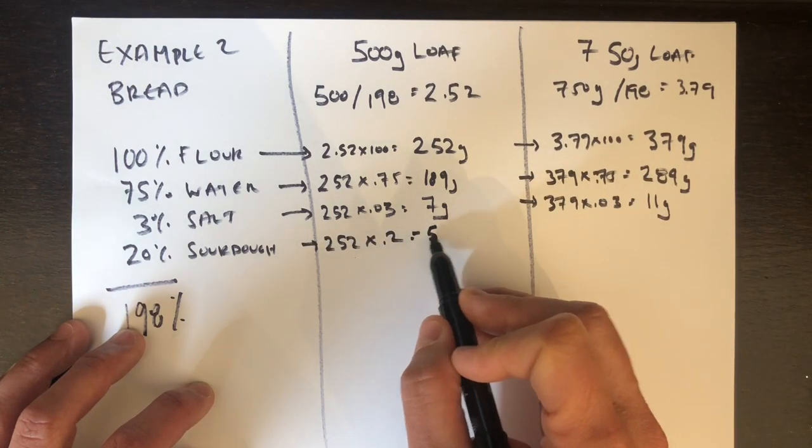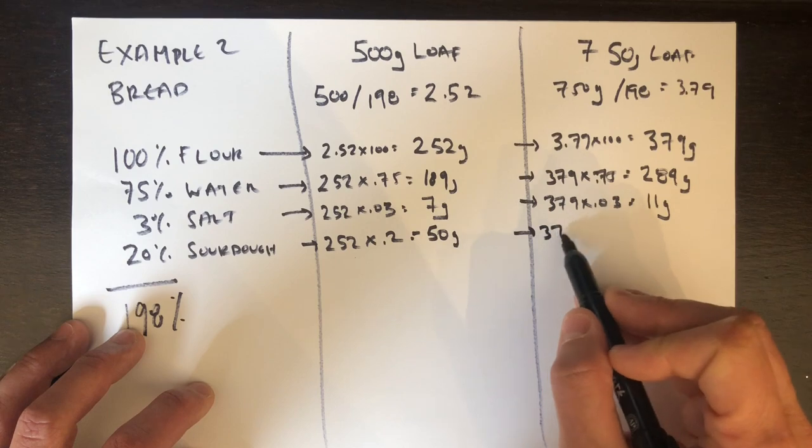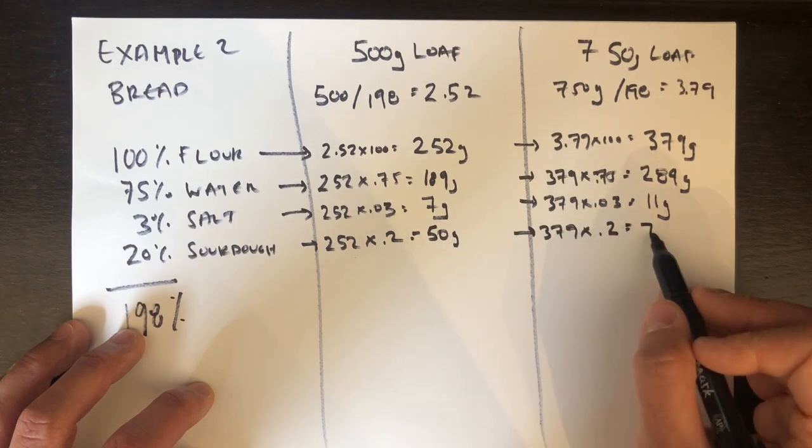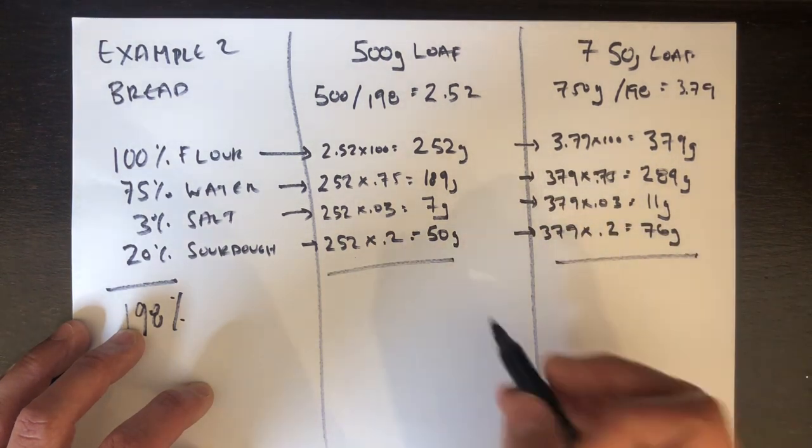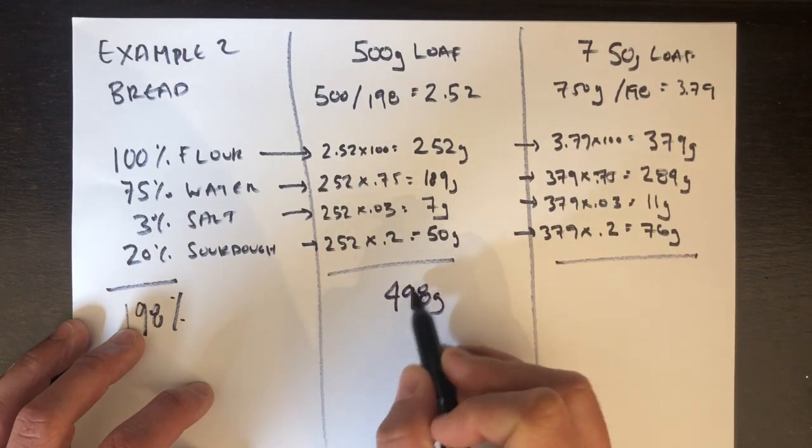I'm just going to go through and fill in my table. So 7 grams of salt, 11 grams of salt, 50 grams of sourdough for my 500 gram loaf and 76 for my 750 gram loaf. Add all that up and there you go. I've got a 498 gram loaf, which is pretty close and a 750 gram loaf for my bread.